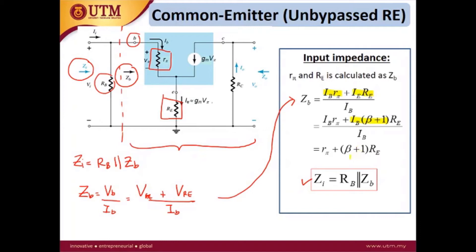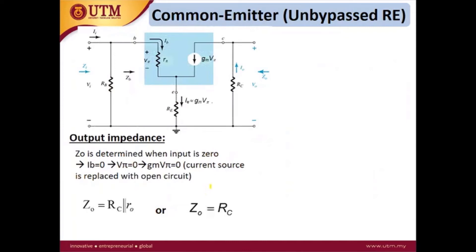The result is ZB = rπ + (β+1)·RE. Once we get the value for ZB, the input impedance is ZB in parallel with RB. For the output impedance, we set the input voltage vi to zero. When vi equals zero, there is no base current and no current source, so that connection is open.